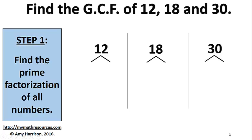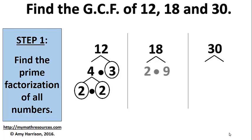4 times 3 equals 12. 3 is prime. 2 times 2 equals 4, and both of those are prime. 2 times 9 equals 18. 2 is prime. 3 times 3 equals 9, and both of those are prime.